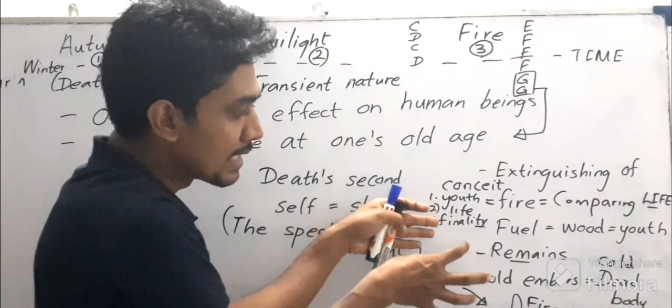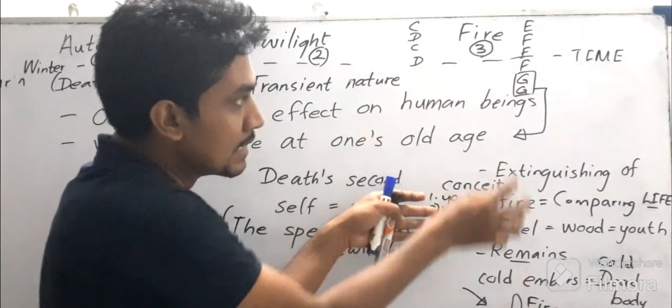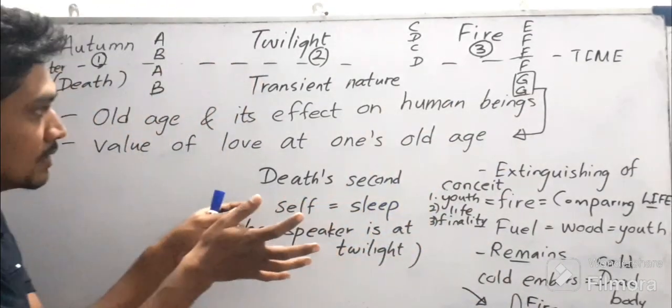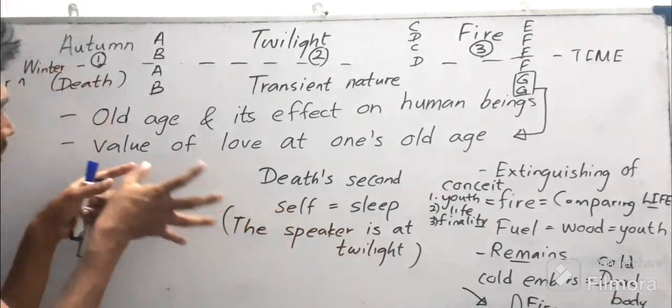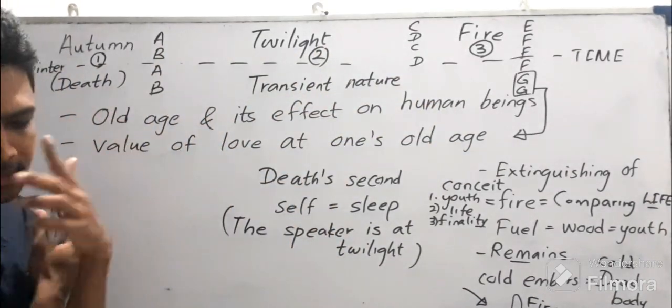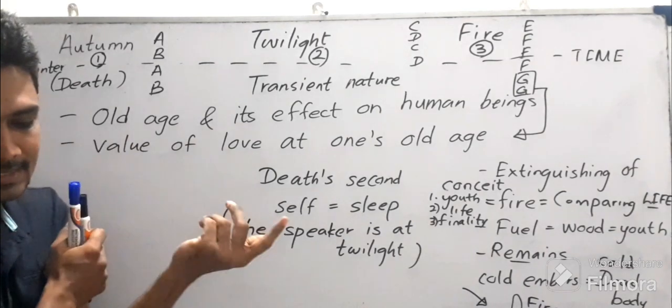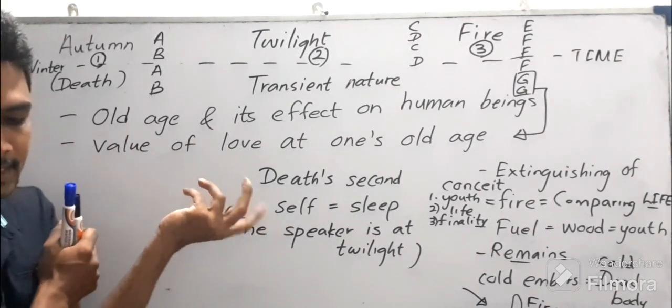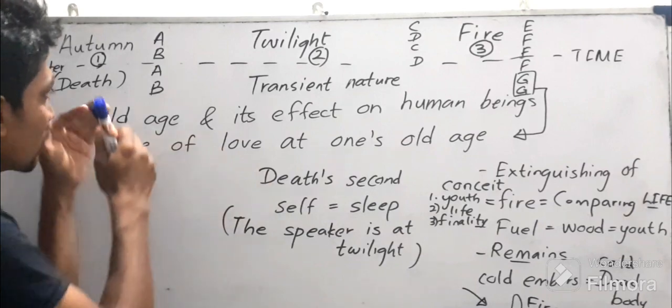We can understand from the last imagery. Based on these three imageries, now let us slowly read out Sonnet number 73: 'That time of year thou mayest in me behold.'